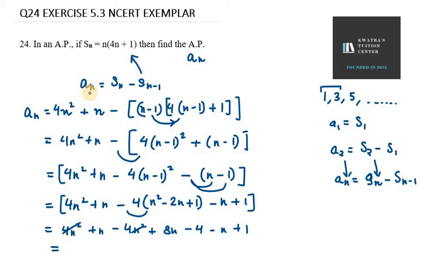You are left with n plus 8n. n plus 8n is 9n. Or you can write it as this n and n gets cancelled out. So you are left with 8n minus 3.